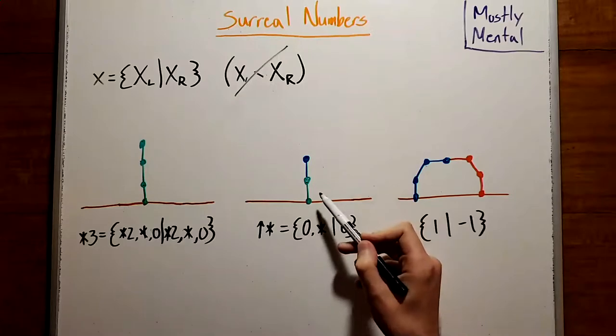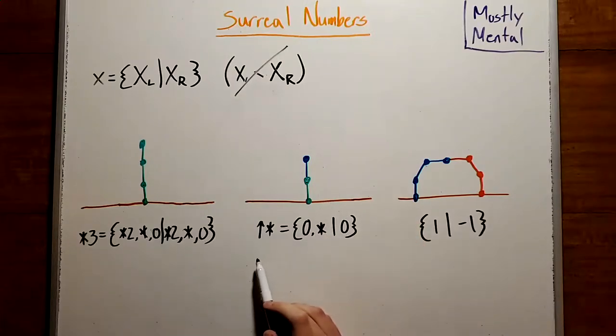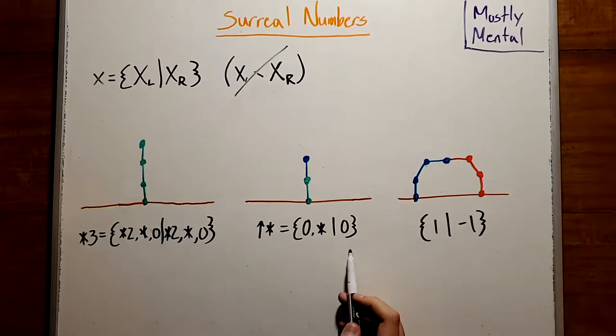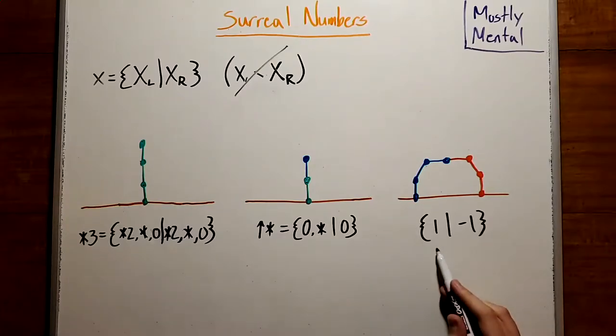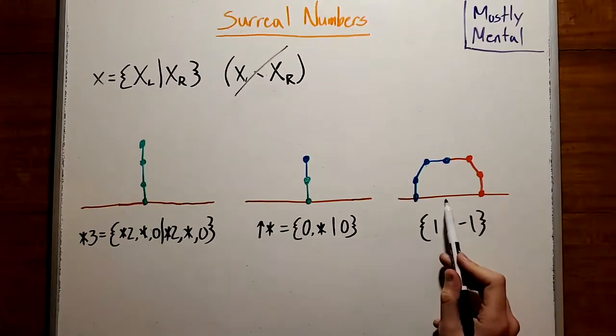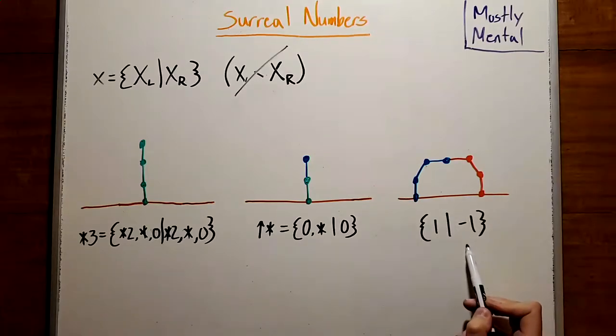Or we could mix edges together, which can give us positions that are neither surreal numbers nor nimbers. Or we might have a game where the left set is larger than the right. For instance, if we add the rule that we can't disconnect edges from the ground, then this position has value 1, negative 1. And this lets us talk about what's known as the temperature of games, which is useful for analyzing positions with isolated pockets of action, like endgames in Go.